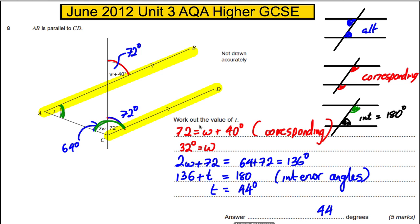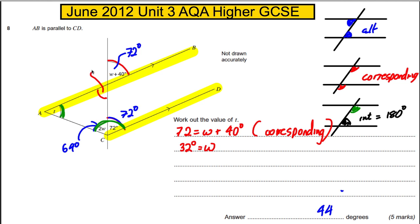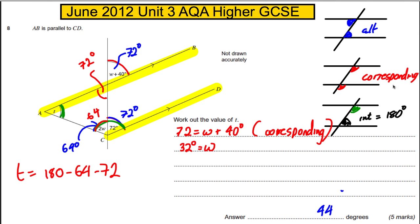Now, another method we could have used: if we know this angle is 72, then this must also be 72 because they are vertically opposite angles. We know W is 32, so this angle must be 64. Therefore T, being in a triangle, must be 180 subtract 64 subtract 72, which again gives us 44 degrees. So that's another way of working it out — five marks for something very straightforward if you keep your wits about it.